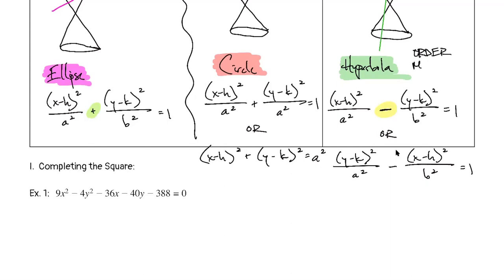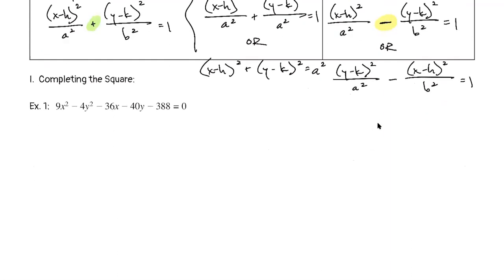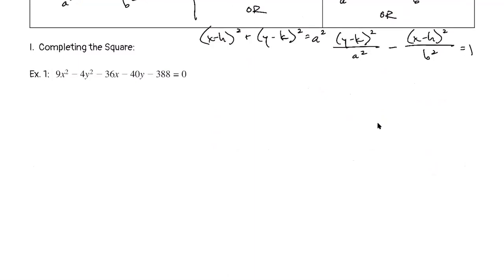For the ellipse, order doesn't matter because addition is commutative — 2+3 is the same as 3+2. But with subtraction, order matters. So with the hyperbola, a key note is that the order matters. Completing the square is very similar to what we did for the ellipse.